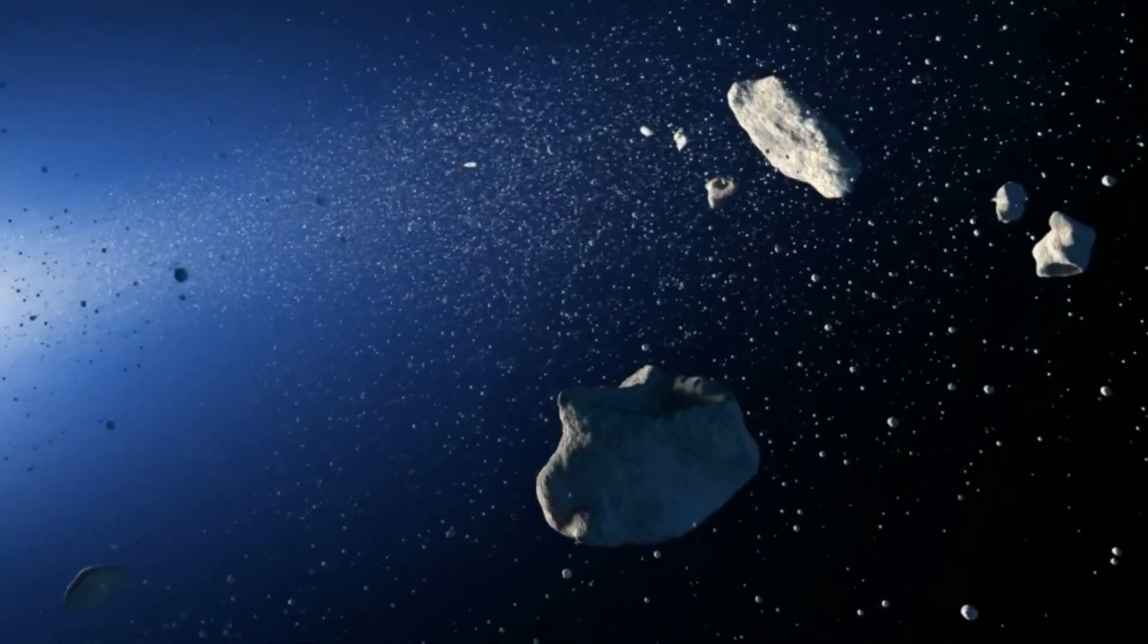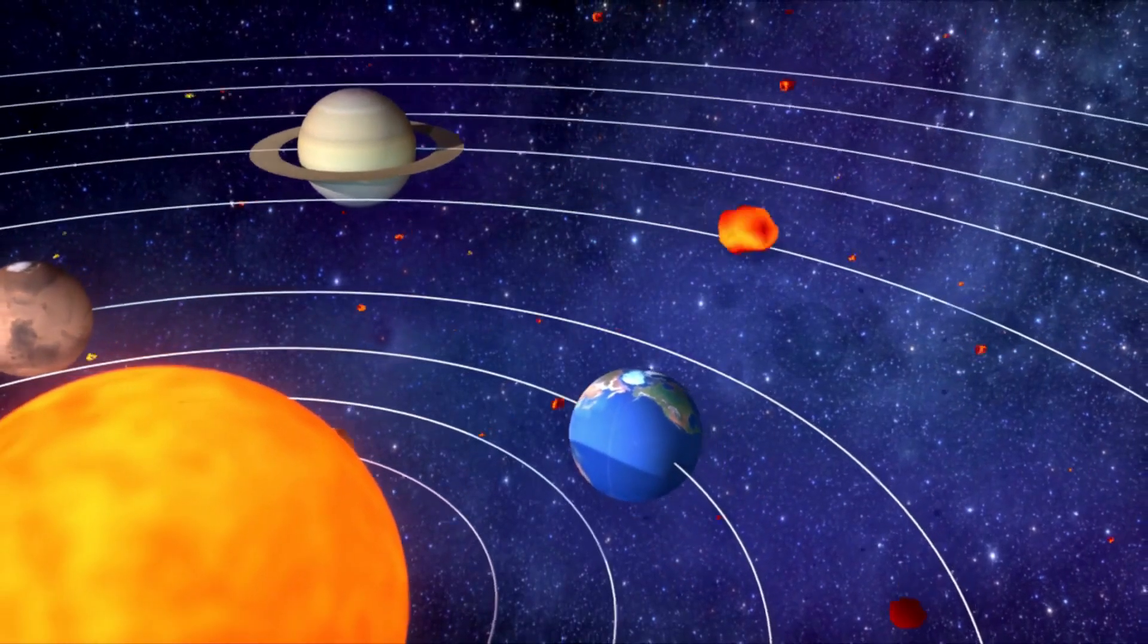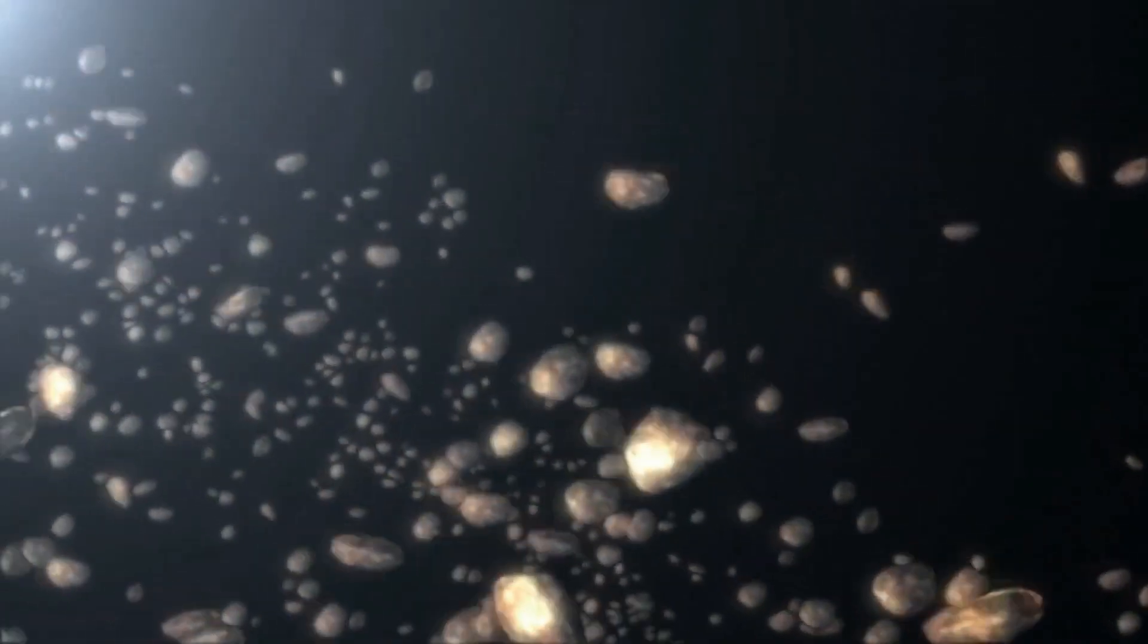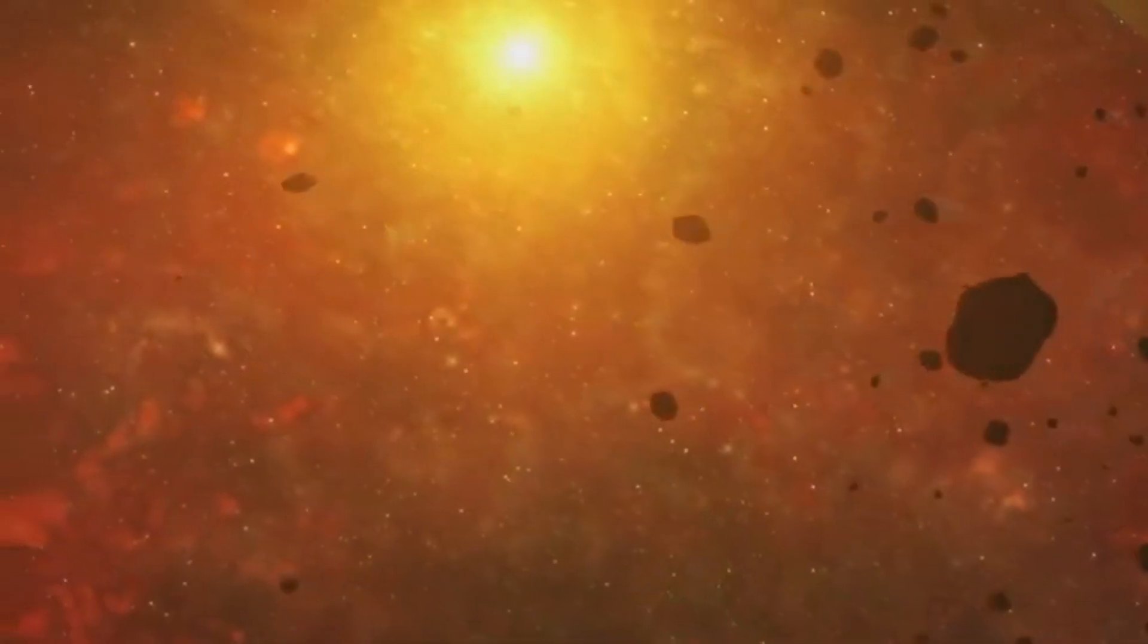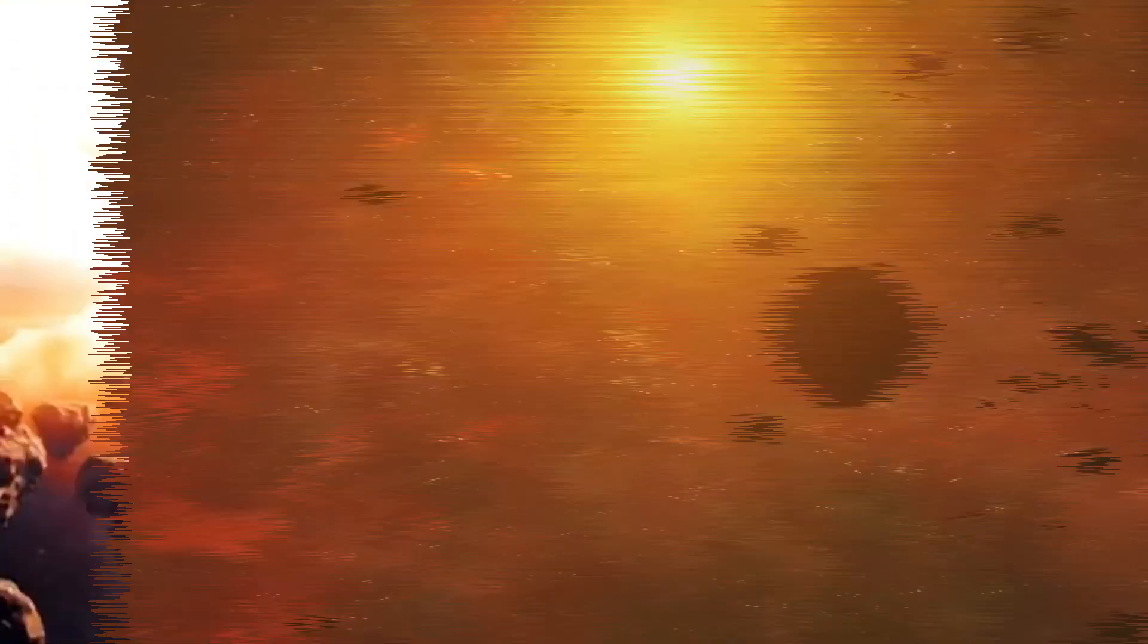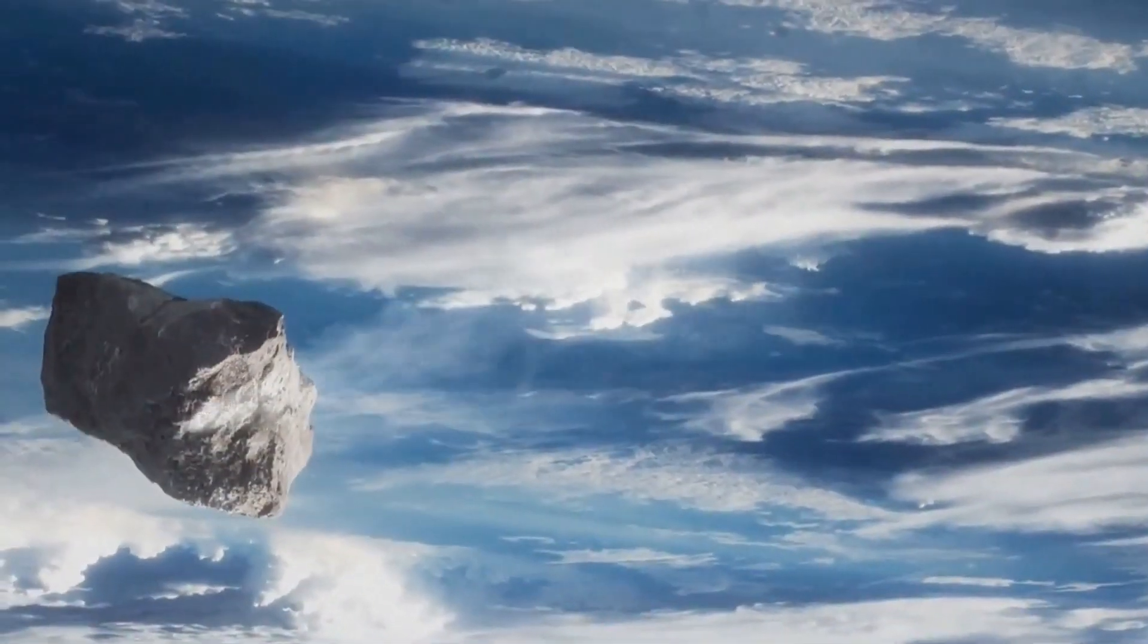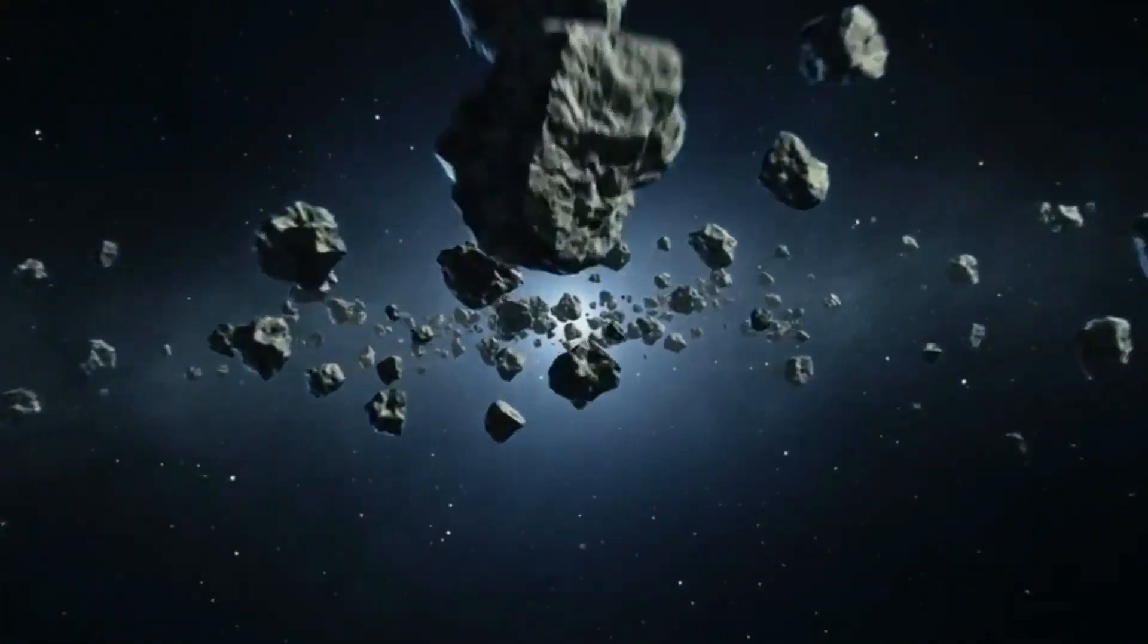Dark comets are a relatively new discovery in the field of astronomy, and they pose one of the most intriguing mysteries in our solar system. To understand dark comets, it's crucial to first understand how comets generally behave. When comets approach the sun, they heat up, and their icy cores start to sublimate, turning from solid to gas, which causes the characteristic glowing tails that we all recognize.